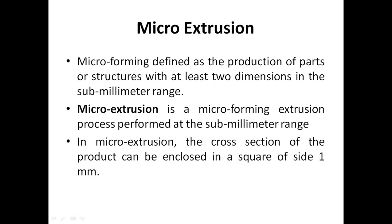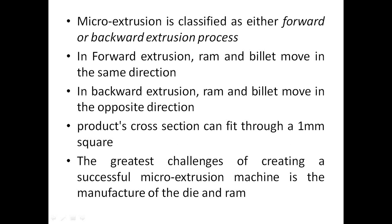Microforming is defined as the production of parts or structures with at least two dimensions in the submillimeter range. Micro extrusion is a microforming extrusion process performed at the submillimeter range, where the cross section of the product can be enclosed in a square of side one millimeter. Micro extrusion is classified as either forward or backward extrusion.